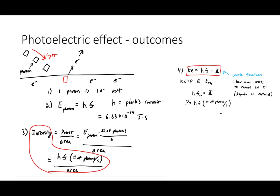The photon model imagines light as a series of particles, and the process by which light kicks an electron out of the material is like a collision — each photon collides with a single electron. Changing the number of photons changes the number of electrons. The energy in each photon is Planck's constant times the frequency, E = hf. Intensity is then energy-per-photon times photons-per-second, so increasing intensity at fixed frequency only increases the number of photons per second, which is why current increases but not voltage.